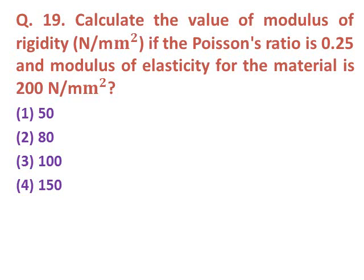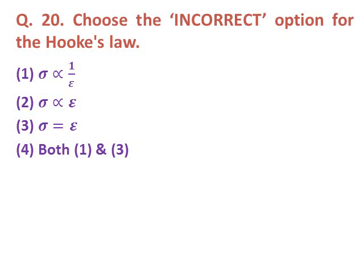Question eighteen: Calculate the value of modulus of rigidity if Poisson's ratio is 0.25 and modulus of elasticity is 200 N/mm². Using the formula E equals 2G(1 plus mu), the correct answer is 80 GPa.